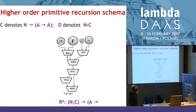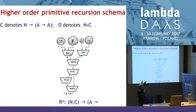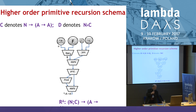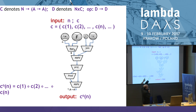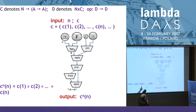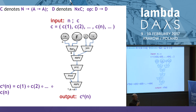Here we have another simple data flow graph — it is the famous higher-order primitive recursion scheme. It takes the functional F from the previous slide as input, a natural number, number 1, and a sequence C which is a sequence of functions from A to A. The result is also very simple: it takes a natural number and a sequence of functions from A to A, and the output is the composition of the first n elements of this sequence. But how can this be realized as hardware? That's the question.